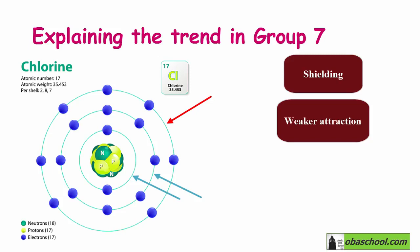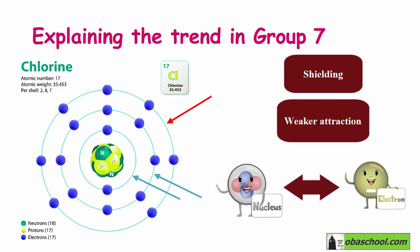So the electrons in these inner shells will make the attraction between the positive nucleus and the electrons in the outermost shell weak.